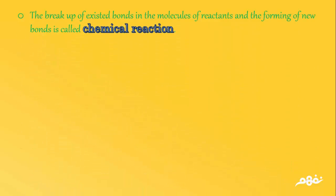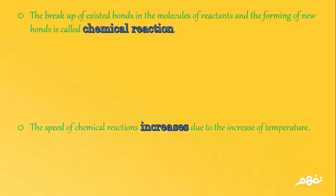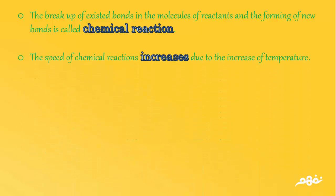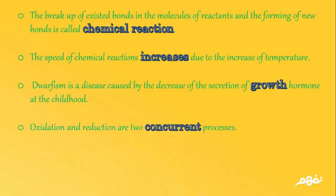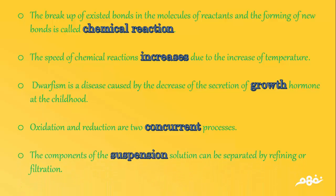Number 14: In the stomach there is hydrochloric acid that helps in the digestion of proteins. Number 15: Solution can be classified in terms of homogeneity into homogeneous and non-homogeneous. Number 16: The breakup of existing bonds in the molecules of reactants and the forming of new bonds is called a chemical reaction. Number 17: The speed of chemical reactions increases due to the increase of temperature. Number 18: Dwarfism is a disease caused by the decrease of the secretion of growth hormone at childhood. Number 19: Oxidation and reduction are two concurrent processes. Number 20: The components of the suspension solution can be separated by refining or filtration.